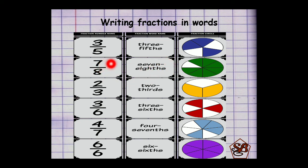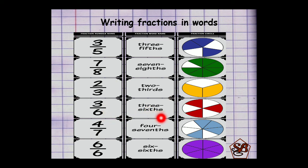The numerator is written as a normal whole number and the denominator is written in ordinal numbers. 2 by 3 is written as 2 thirds. 3 by 6 is written as 3 sixths. 4 by 7 is written as 4 sevenths. 6 by 6 is written as 6 sixths.